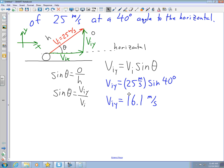That's the vertical component. And if I were to label it up on the diagram, that's a vertical component of 16.1 meters per second. The other one is horizontal. So let's do that.